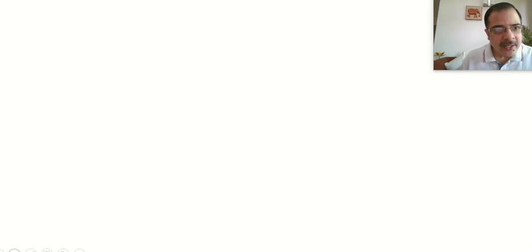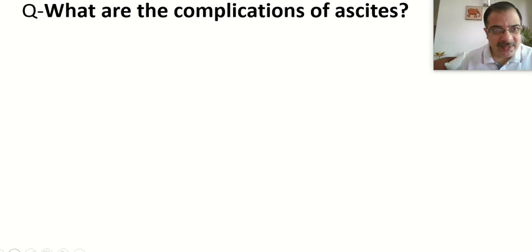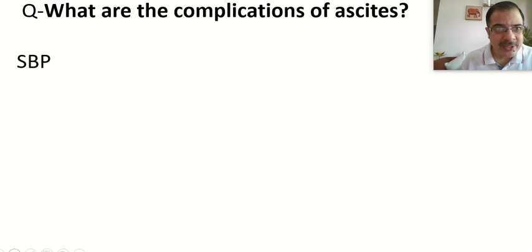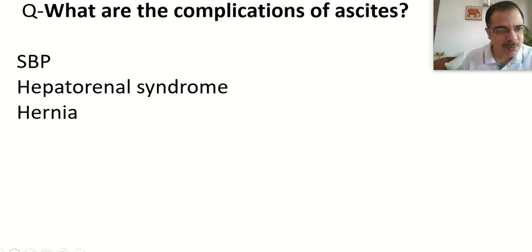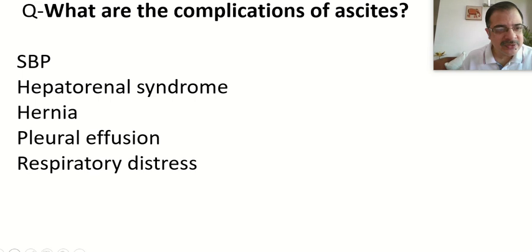Complications of ascites include: spontaneous bacterial peritonitis (SBP), especially in cirrhosis and nephrotic syndrome; hepatorenal syndrome in chronic liver disease; abdominal wall hernias due to high intra-abdominal pressure; pleural effusion due to tense ascites; and respiratory distress due to lung compromise.